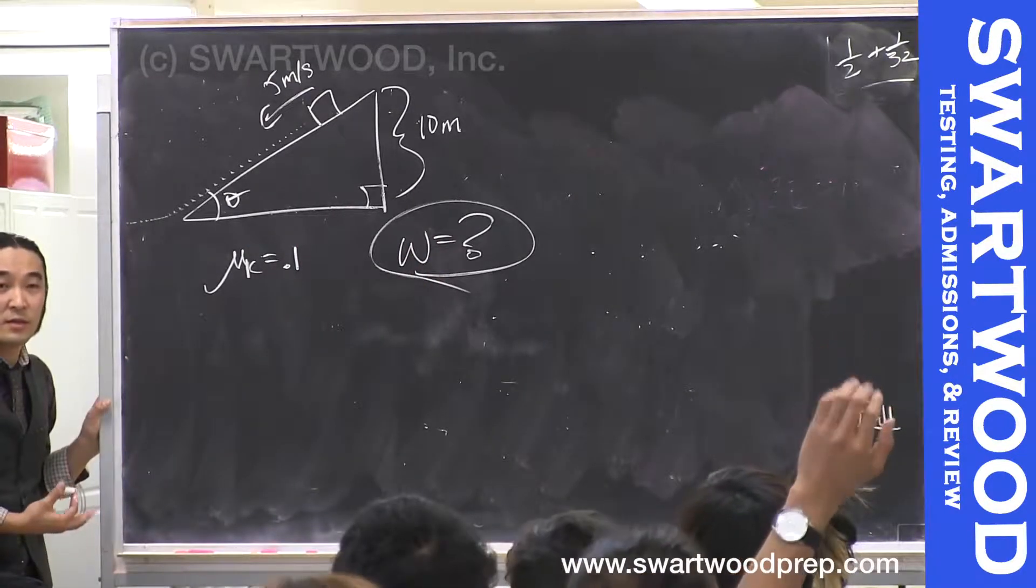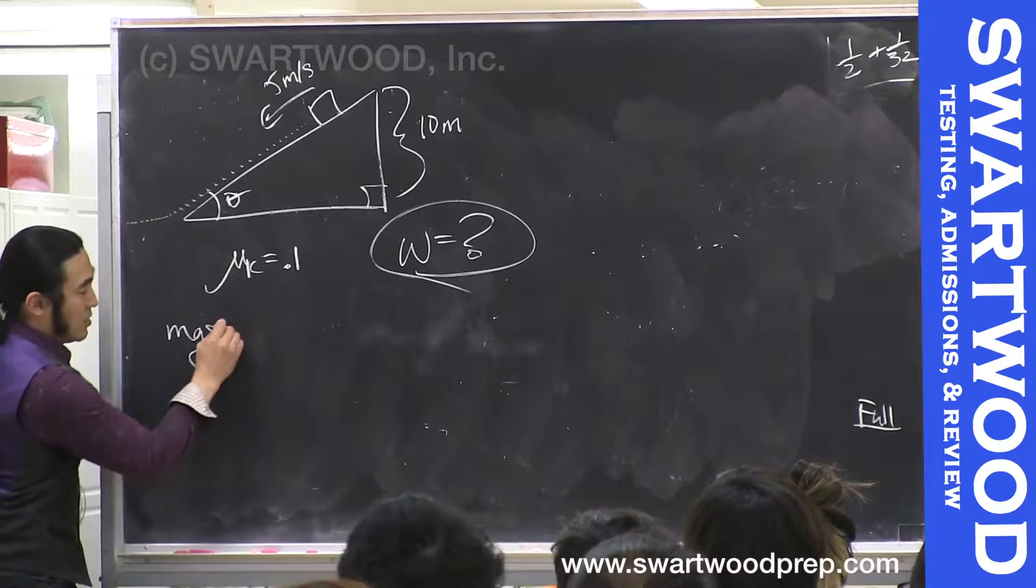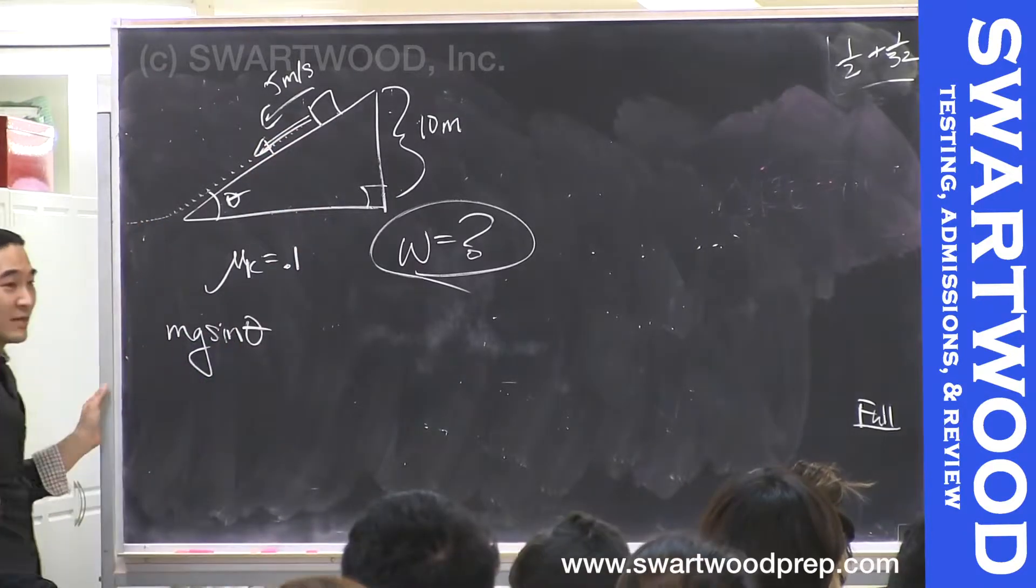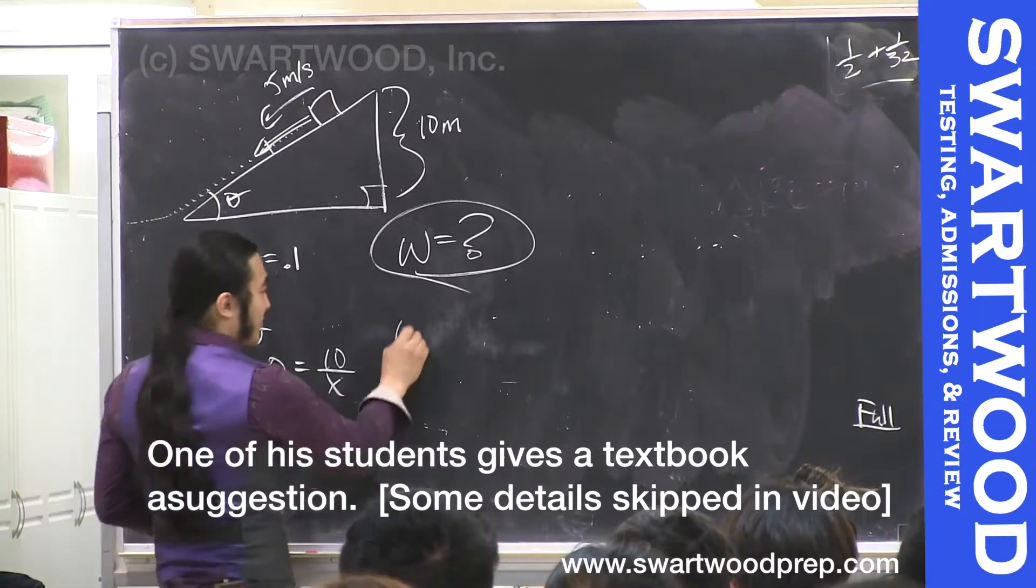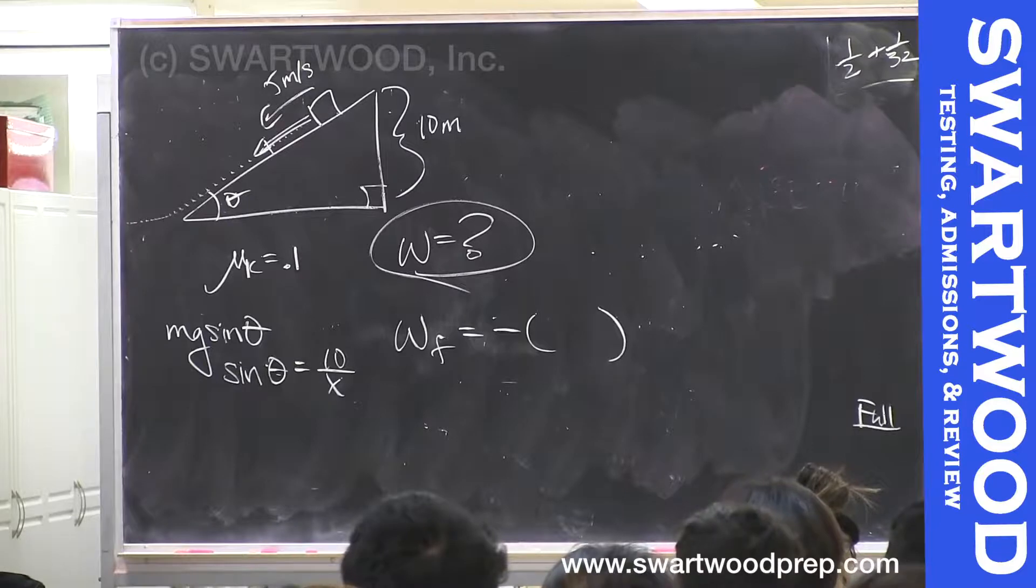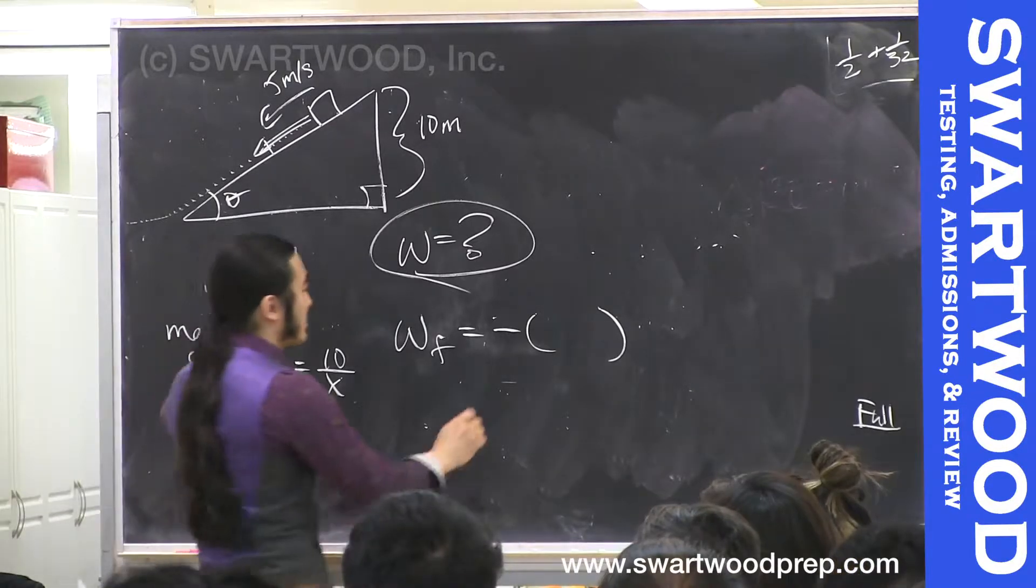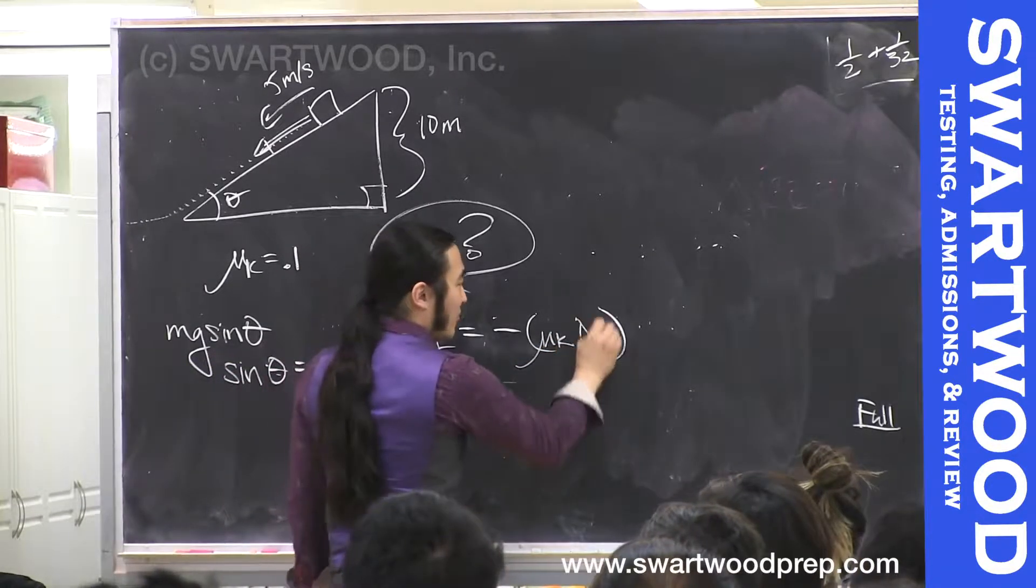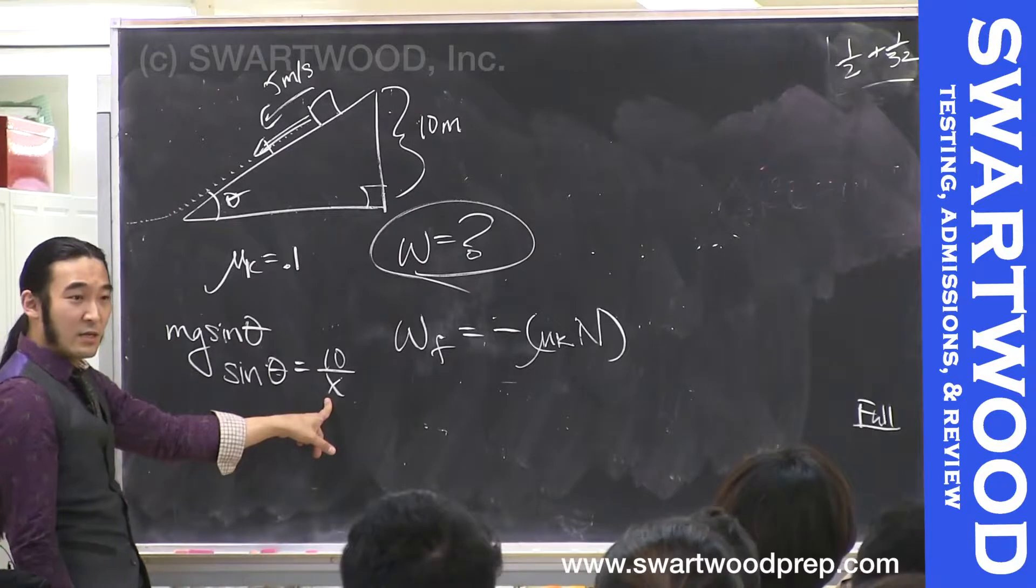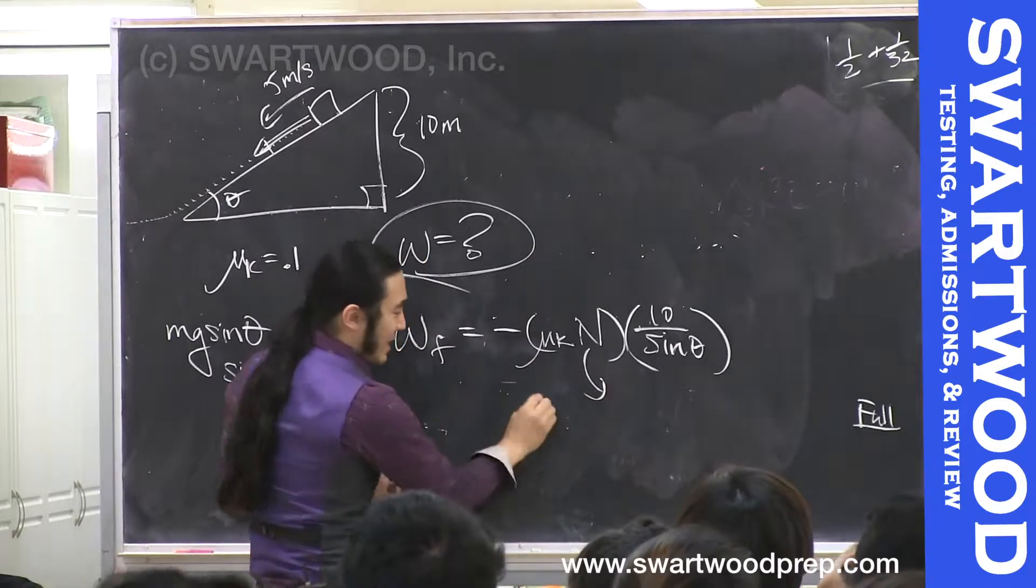The work of friction is equal to negative, right? What's the force of friction? It's mu k times the normal force. So that's the force of friction times the distance down here, which would be 10 over sine theta. But then to get this, I'd have to do mg...